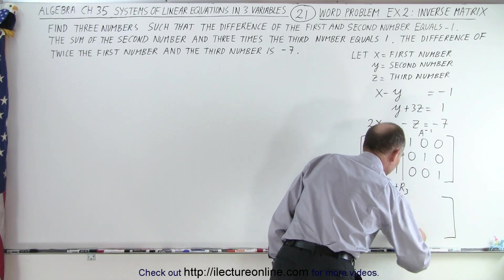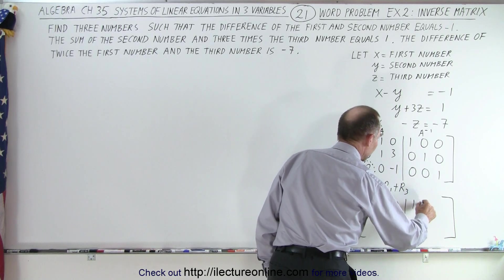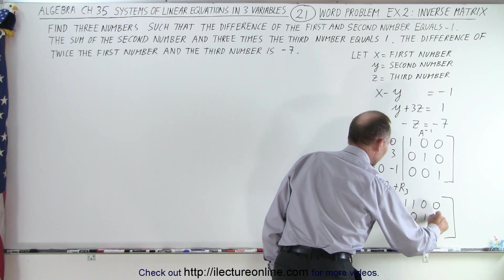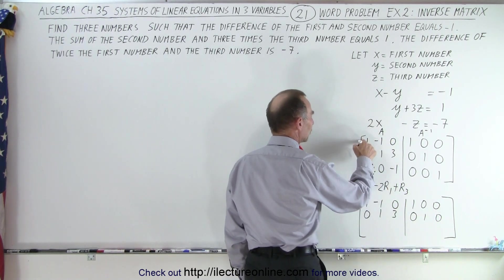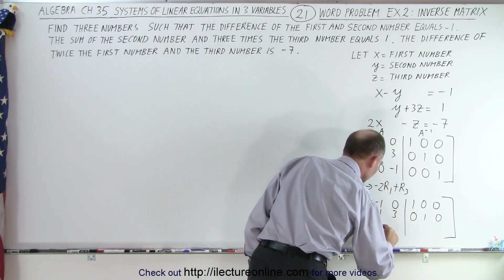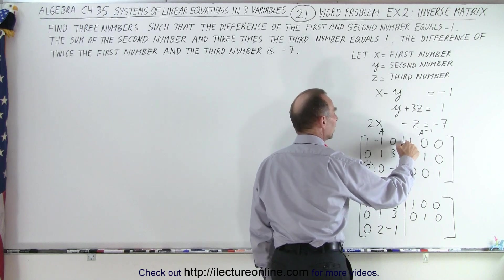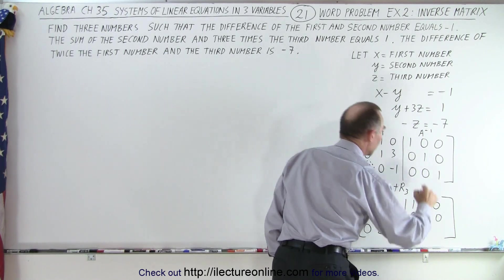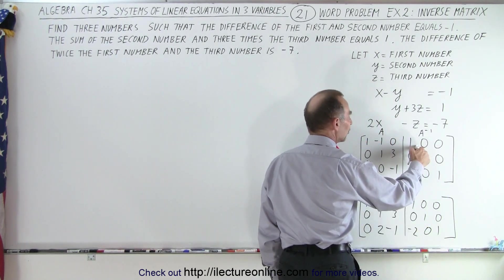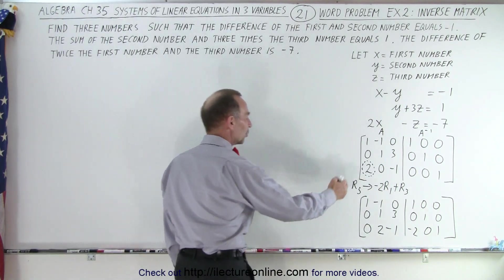The first row and the second row do not change, so we get 1, negative 1, 0 and 1, 0, 0. The second row is 0, 1, 3 and 0, 1, 0. On the third row: negative 2 times this added to this gives me 0. Negative 2 times negative 1 is positive 2, added to 0 gives me 2. Negative 2 times 0 is still 0, so we keep negative 1 there. Negative 2 times 1 is negative 2, added to 0 is negative 2. The 0 and 1 stay because negative 2 times 0 doesn't change them. The first column is now 1, 0, 0.